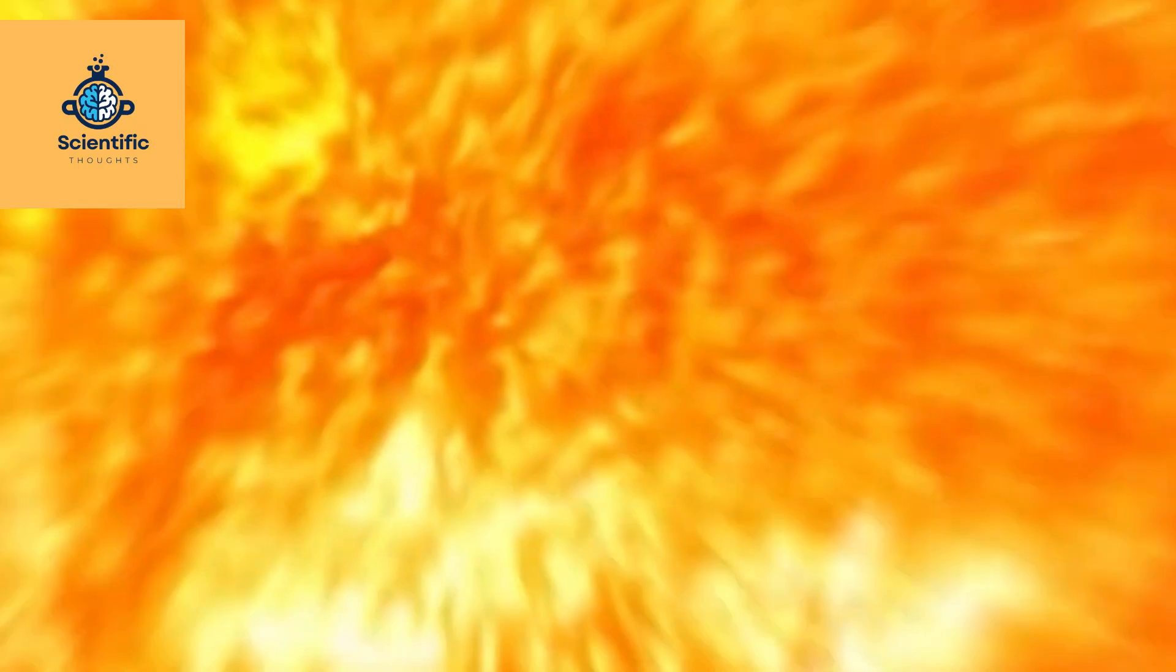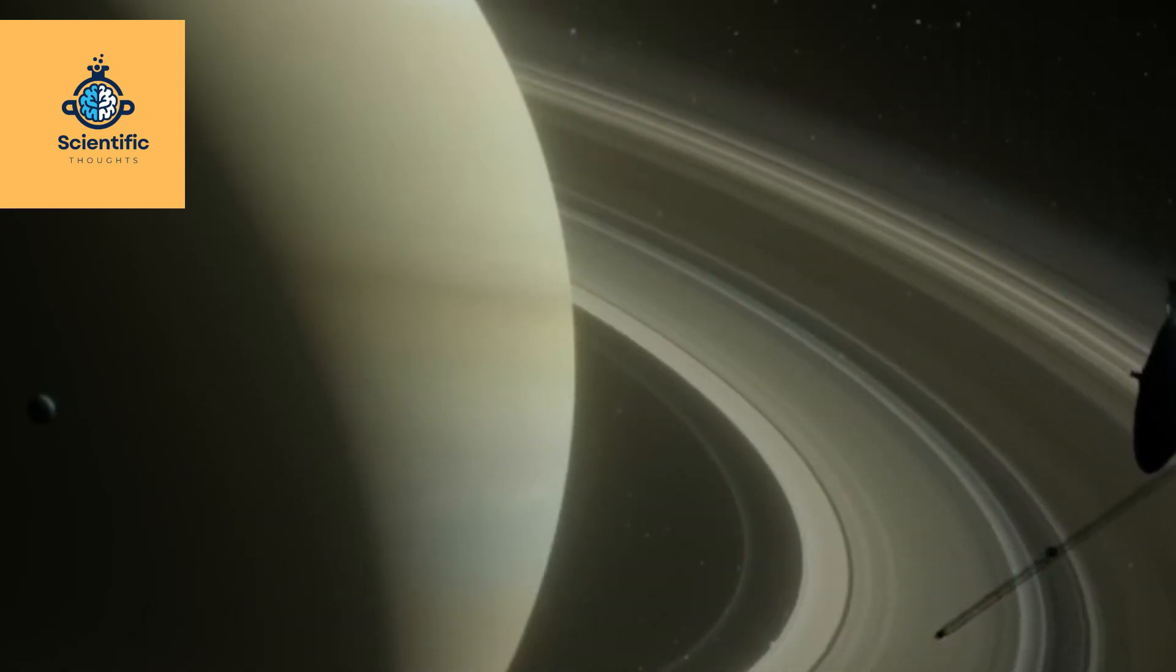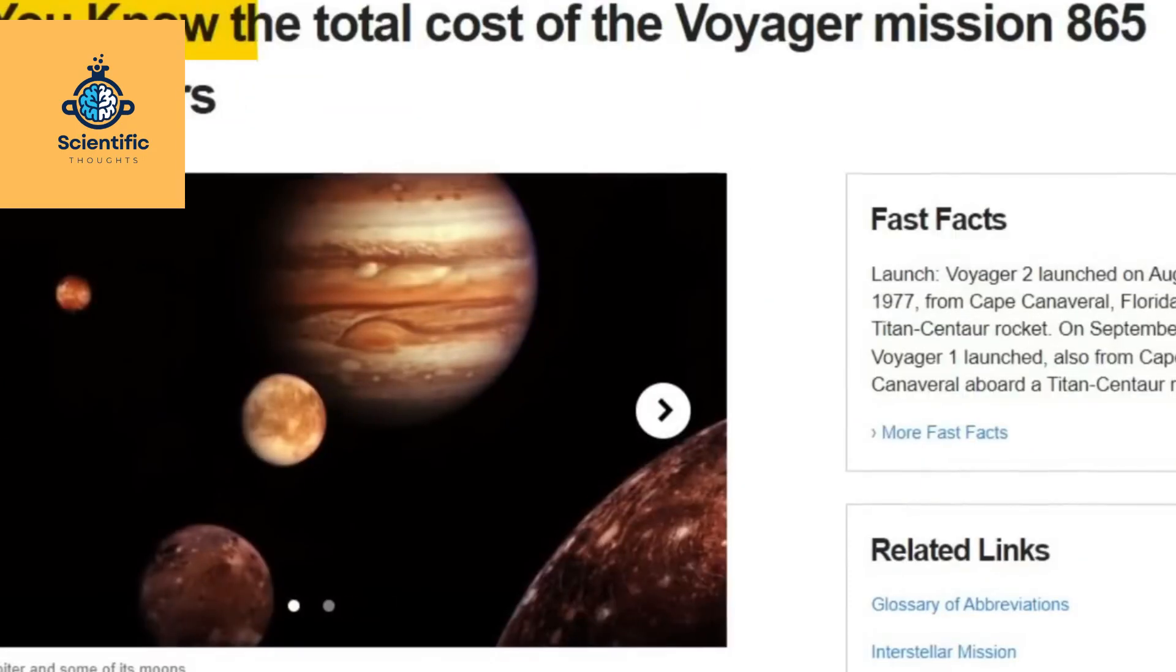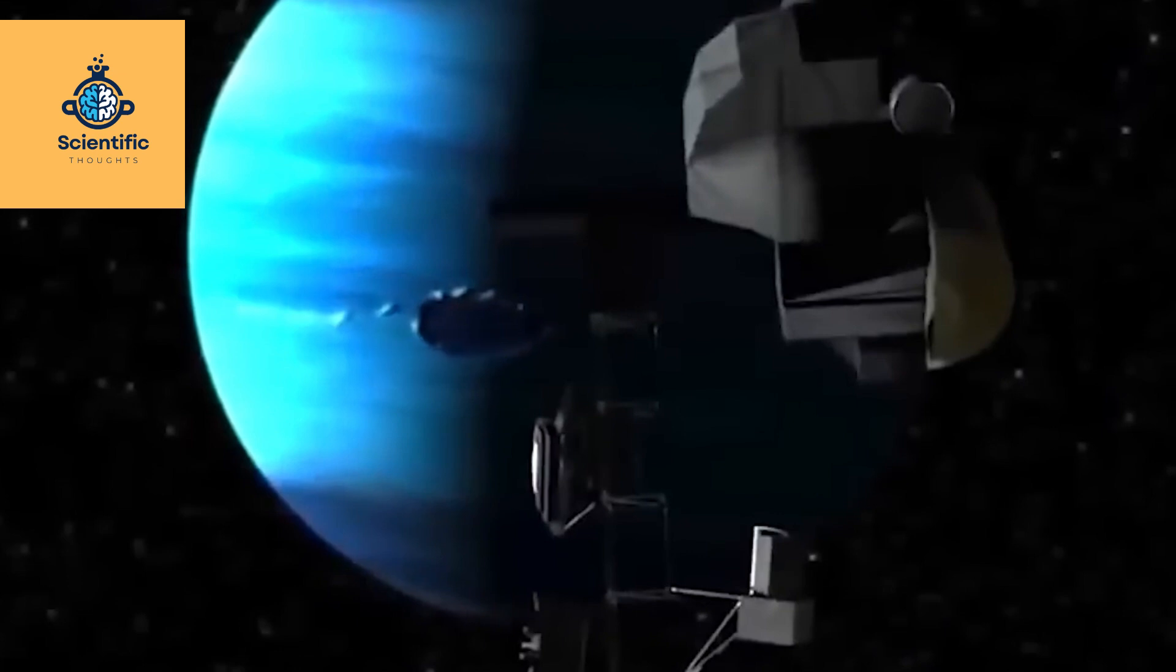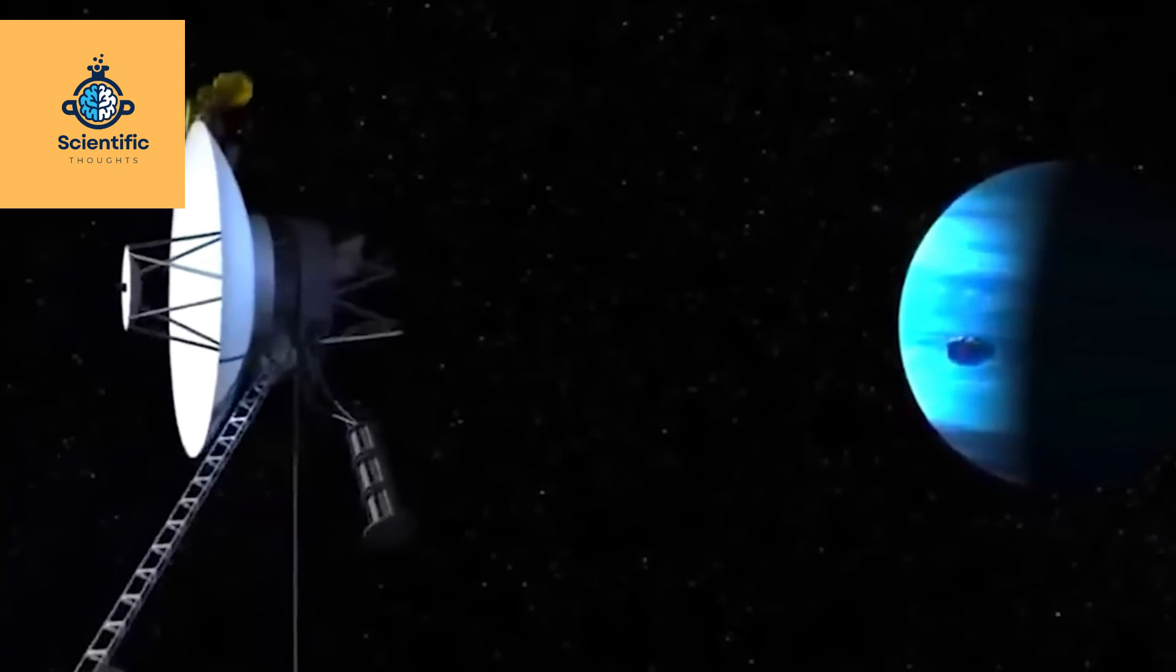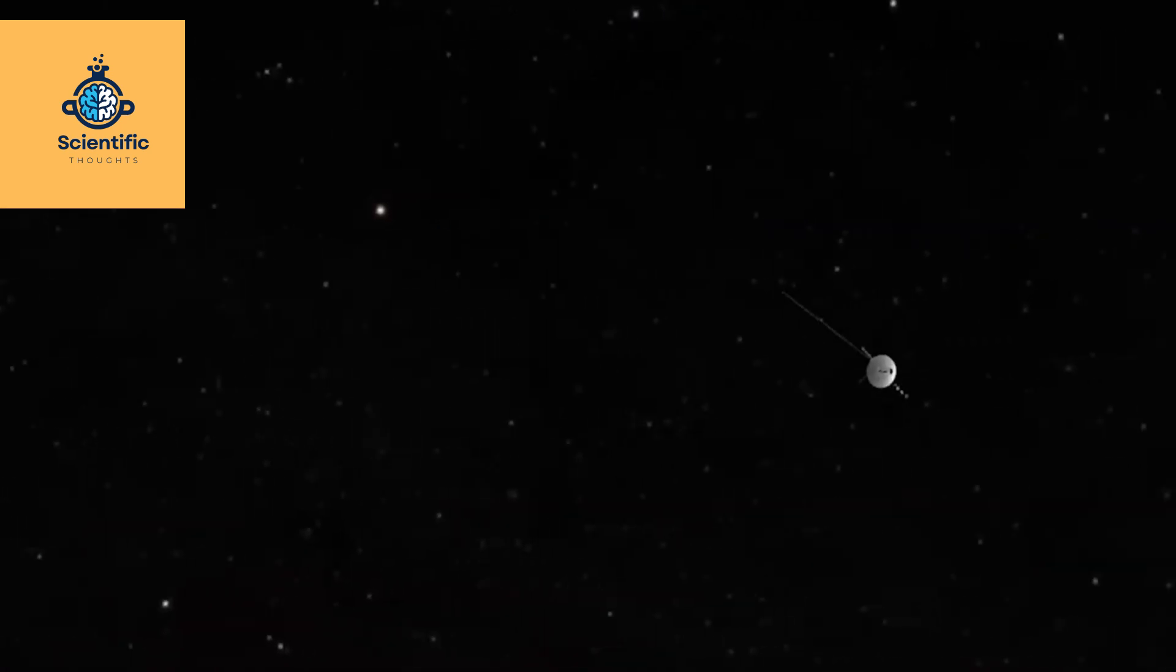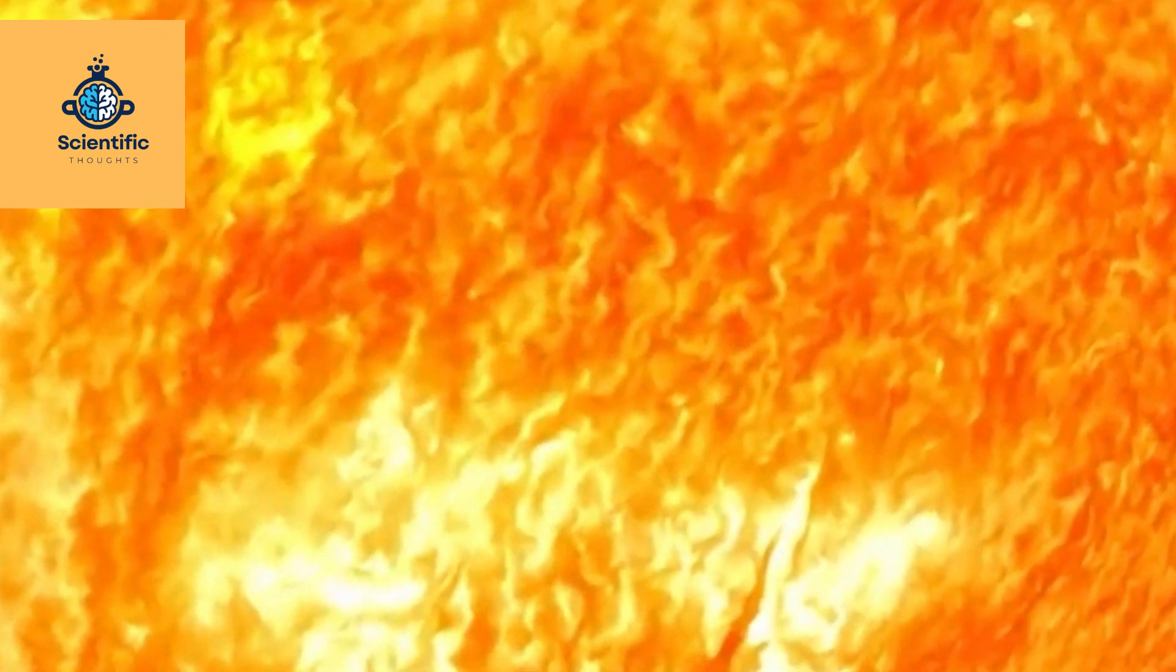Embark on a celestial odyssey to the outer realms of our solar system, where the mysterious moon Callisto silently orbits, bearing the scars of eons past. Explore Callisto's ancient tapestry through Voyager 2's lens, capturing a breathtaking panorama of its cratered surface and timeless beauty. Voyager 2's exploration of Callisto in 1979 unveiled a frozen world bearing the imprints of a cosmic history etched in craters, a testament to the moon's resilience and the profound forces at play in the outer reaches of our solar system.